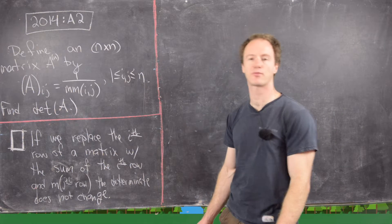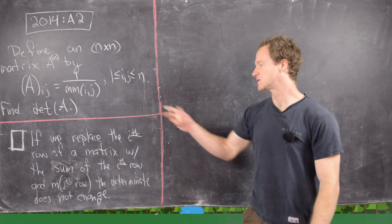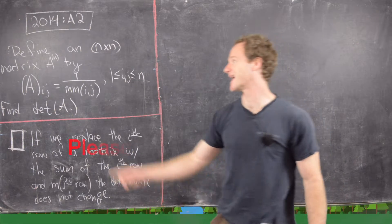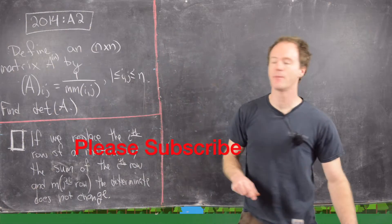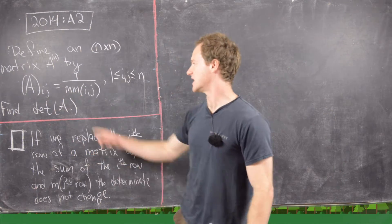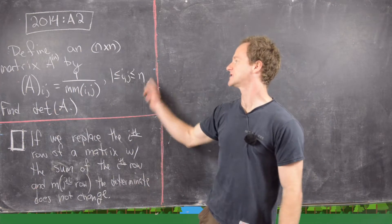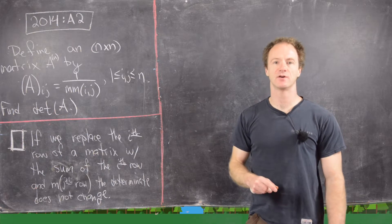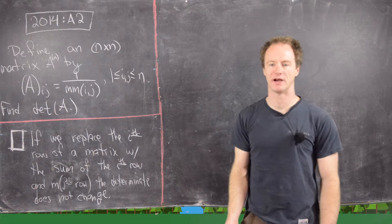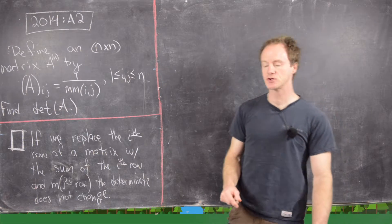In this video we're going to look at problem A2 from the 2014 Putnam exam. We define an n by n matrix A — written A superscript n — where A_ij equals 1 over the minimum of i and j, for 1 ≤ i, j ≤ n. The goal is to find the determinant of A^n. We're going to use the following fact as we form our solution.